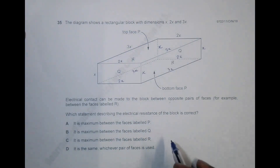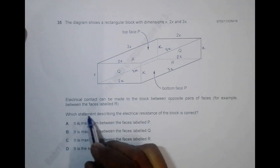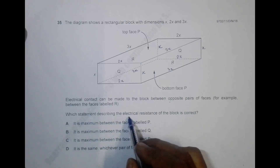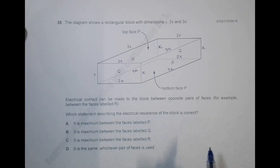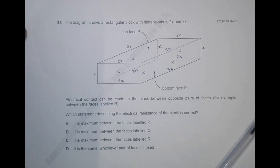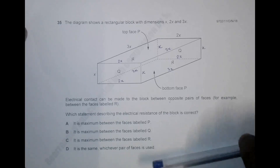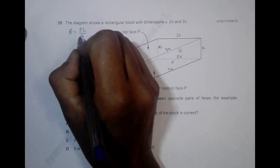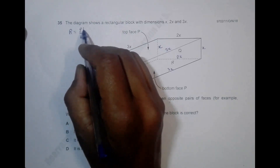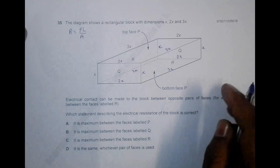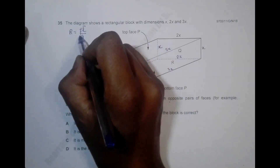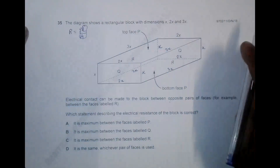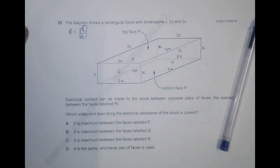We have to find which statement describing the electrical resistance of the block is correct — specifically, across which pair of faces the resistance is highest. Remember that resistance R = ρL/A, where ρ is resistivity, L is the length, and A is the cross-sectional area.